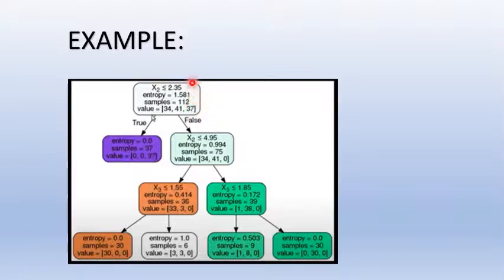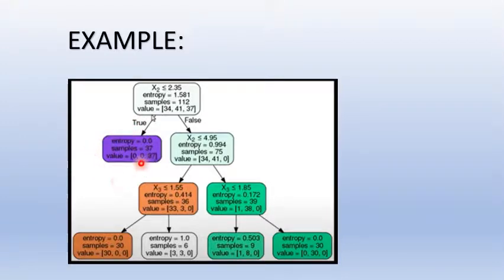We will calculate the entropy equation. Here we consider x2. This is a feature of x2 with a value less than or equal to 2.35. In this case, entropy is zero. That means we have one type of classification and all samples are from the same type.